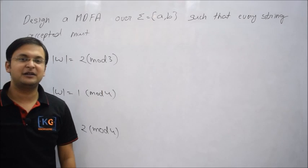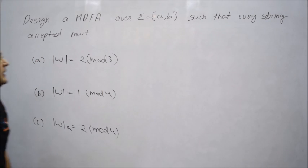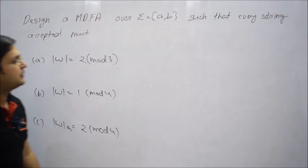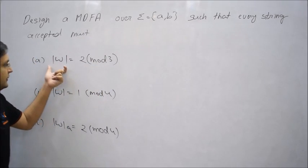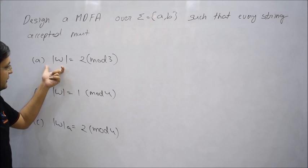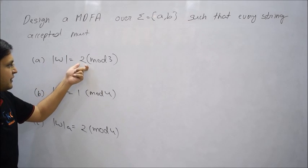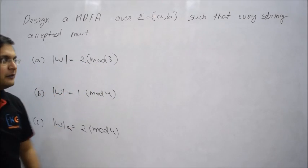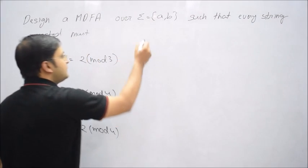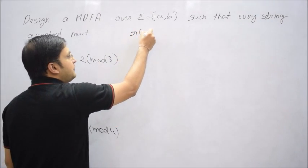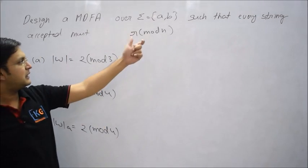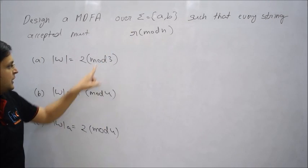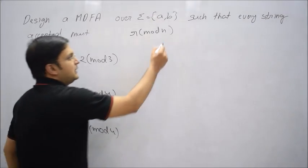Let's try this question: design a minimal DFA over alphabet {a, b} such that every string must be accepted in the fashion of 2 mod 3. First, understand how to read this — a string W where the length of W must satisfy 2 mod 3. This pattern means: remainder r when you divide something with n. If you divide something with n, the remainder must be r.